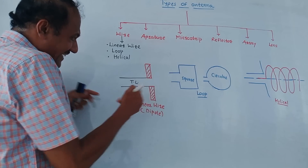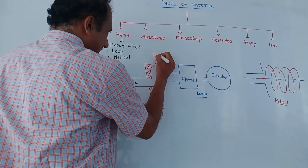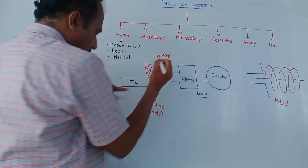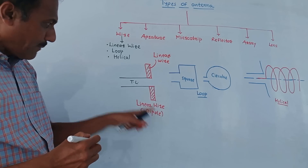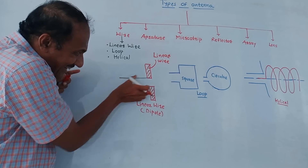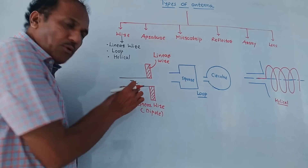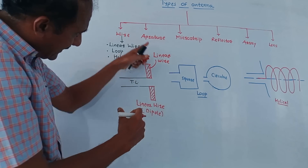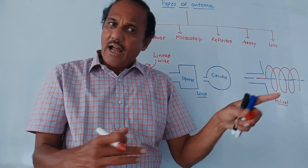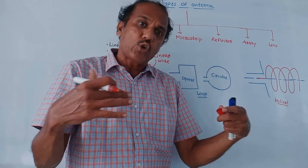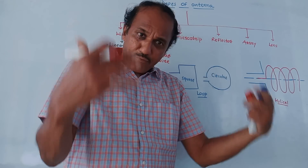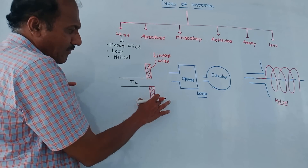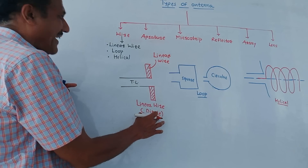These are the linear wires. The two linear wires shown in the diagram form a dipole, and they are connected to a TL, which stands for transmission line. The signal travels through the transmission line and is applied to the linear wire antenna. Due to the phenomena discussed in earlier videos, radiation takes place. This is the function of the linear wire antenna, also called a dipole antenna.